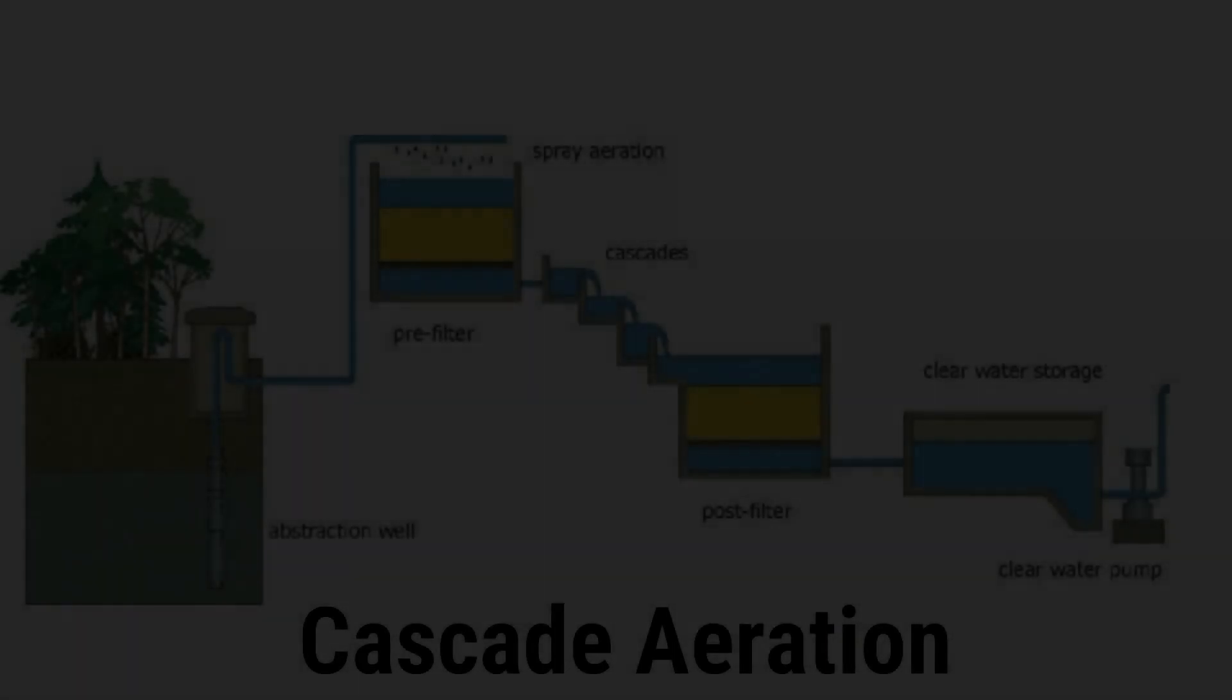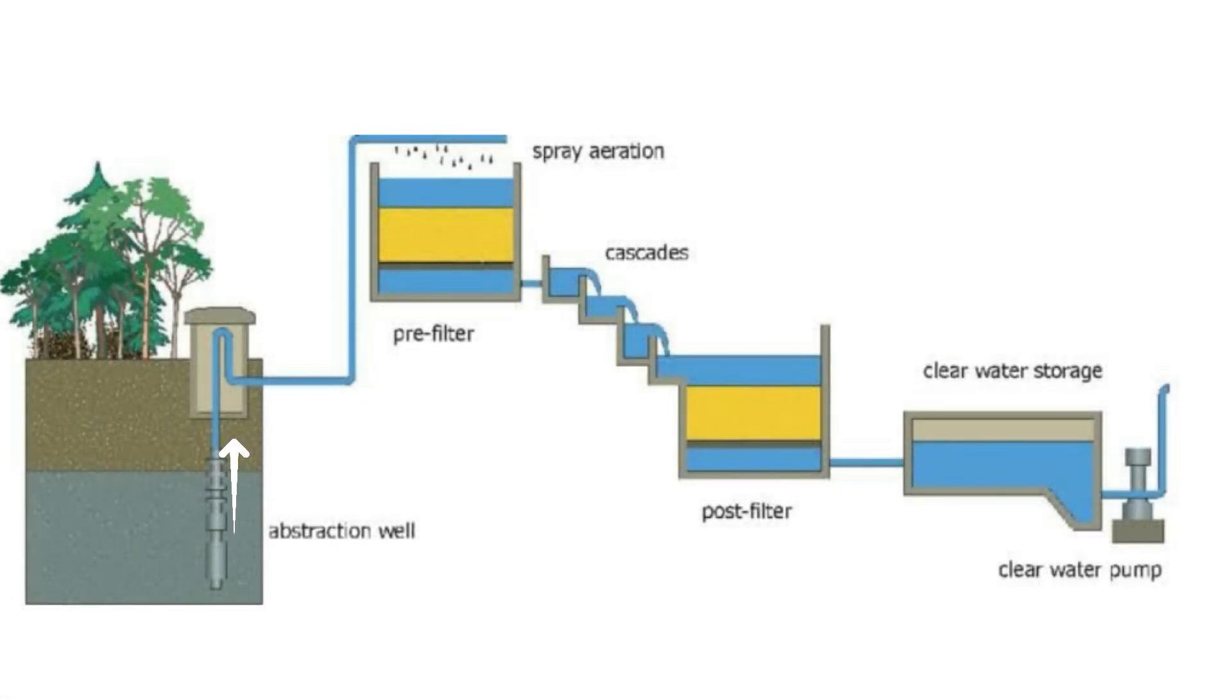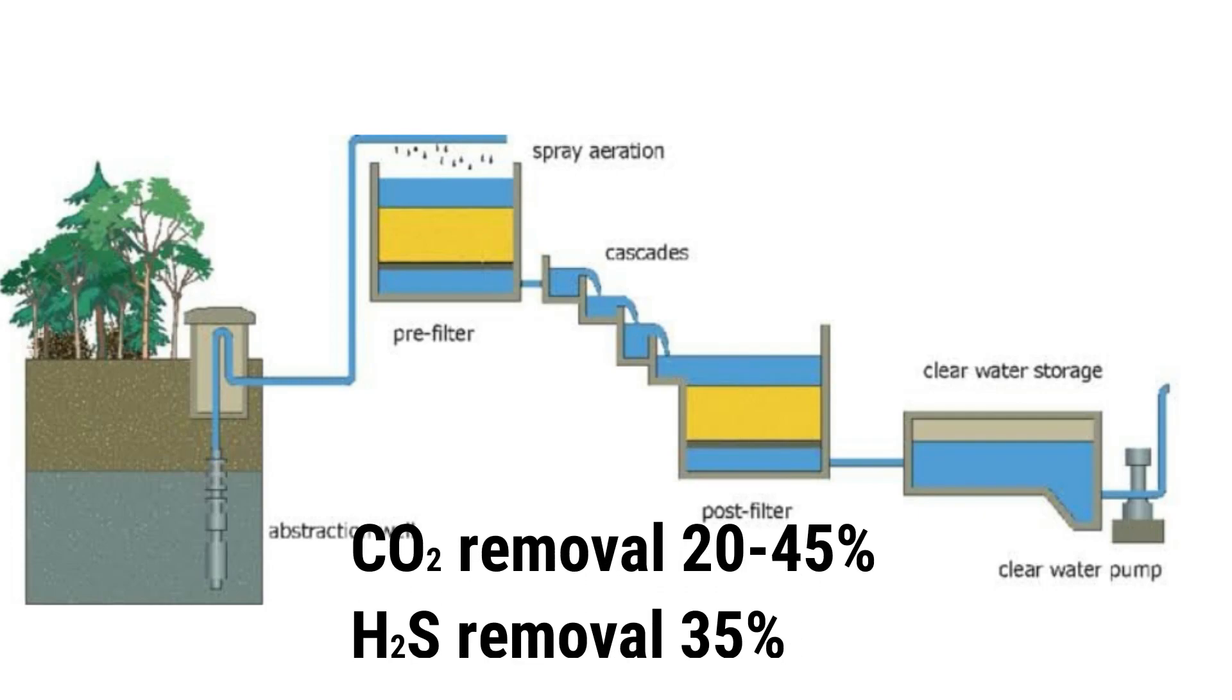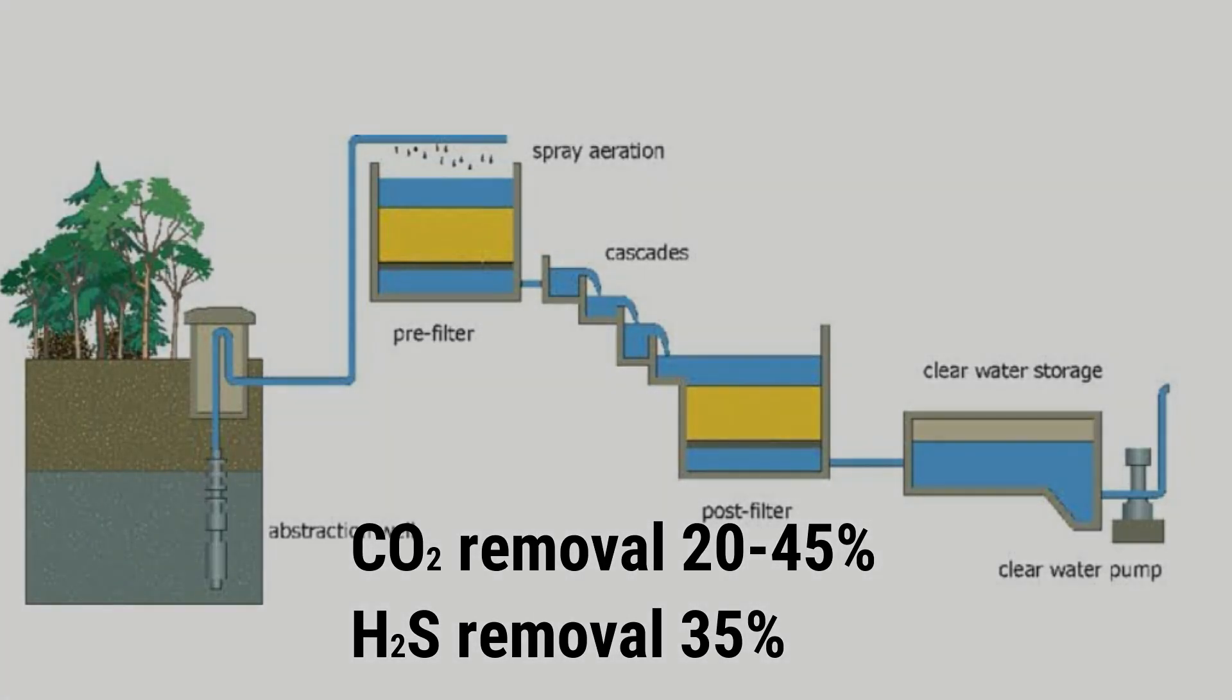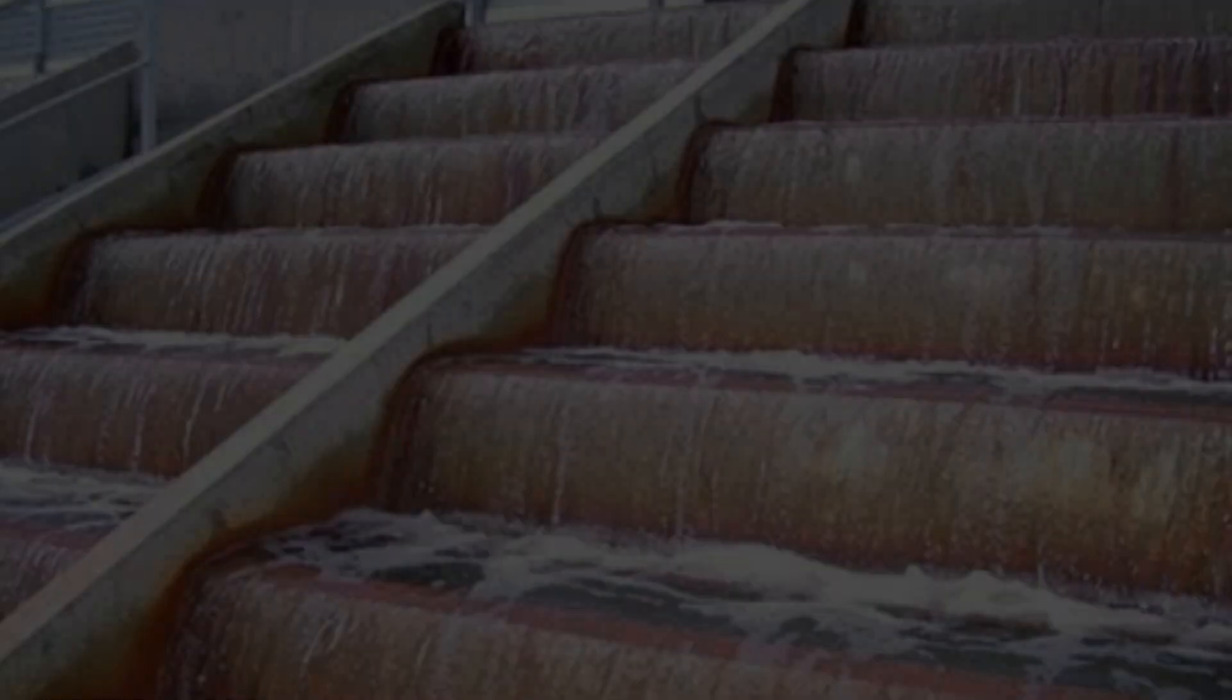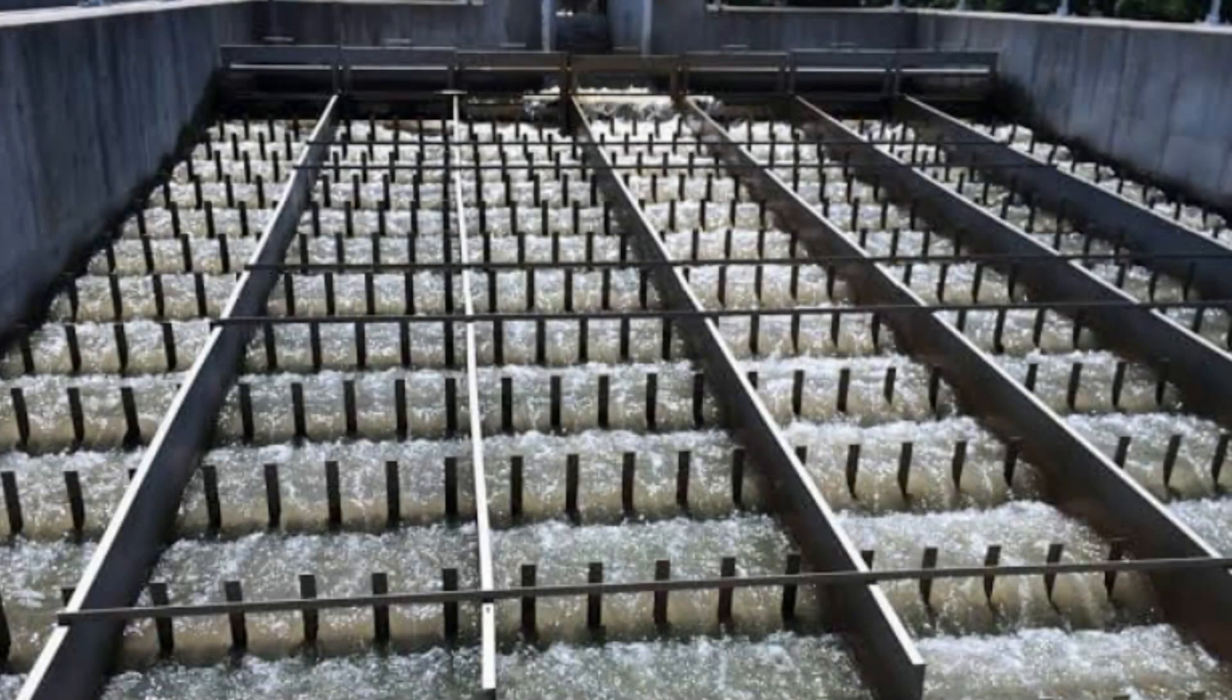This is a cascade aerator system. You can see the water from the obstruction well is pumped and through a spray aerator, the water is sprayed through this filter. Cascade aeration means gravity aerator because the water is falling by means of gravity and after some post filtration, this water is stored in a storage tank. CO2 can be removed by 20 to 45% and H2S can be removed by 35%.